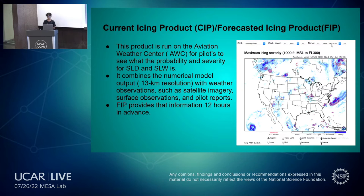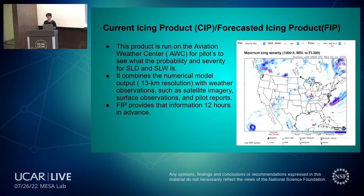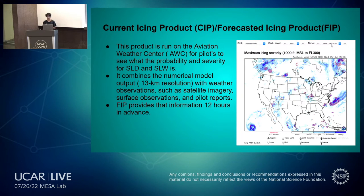The Current Icing Product and Forecast Icing Product — SIP and FIP — are graphical displays shown on the Aviation Weather Center's page, so pilots can assess the probability and severity of SLD before flying. This uses numerical model output at 13-kilometer resolution, combined with satellite imagery, surface observations, and pilot reports. The FIP does the same thing but provides information 12 hours in advance.